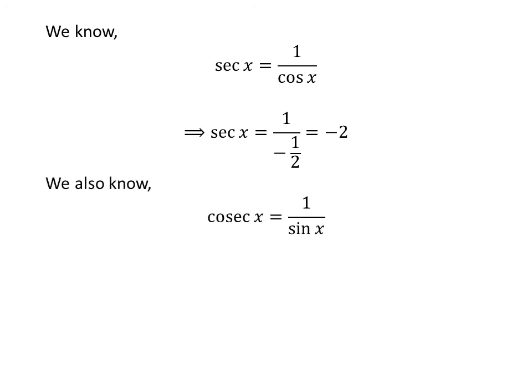We also know 1 upon sine of x is equal to cosecant of x. So, cosecant of x is equal to 1 upon minus square root of 3 upon 2, which is equal to minus 2 upon square root of 3.